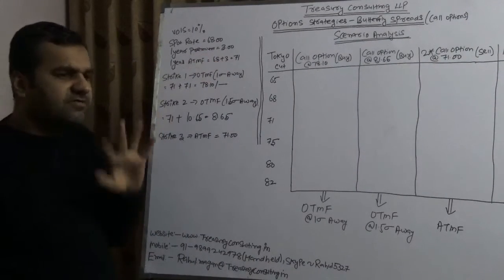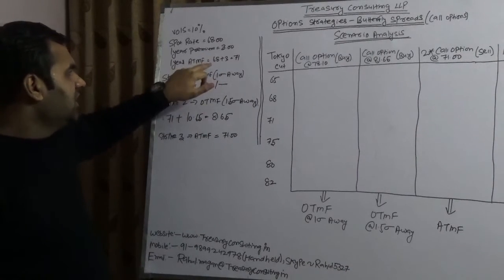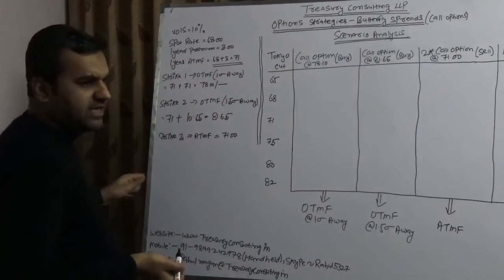One year premium is roughly 2.70 paisa, for the sake of simplicity we have taken 3 rupees. So at the money is roughly 71, which is spot plus premium we have taken.